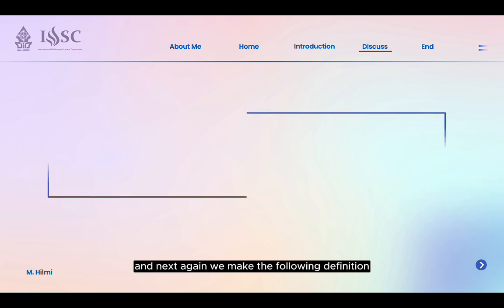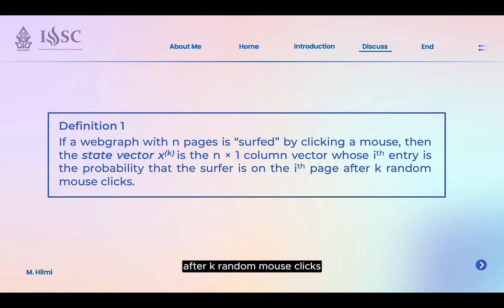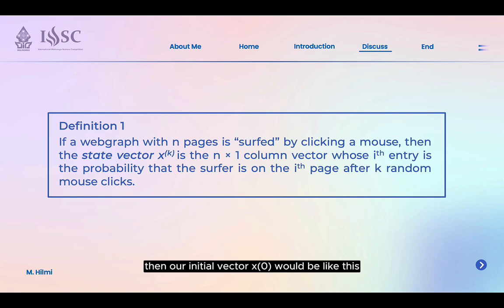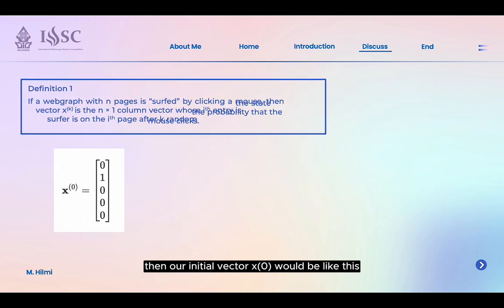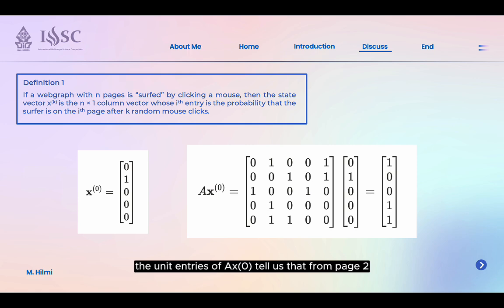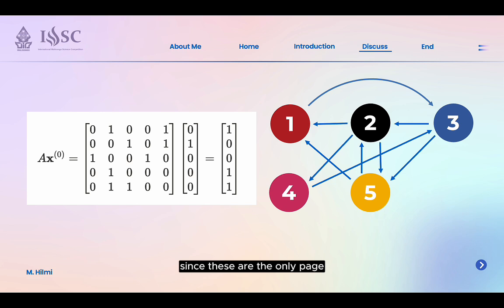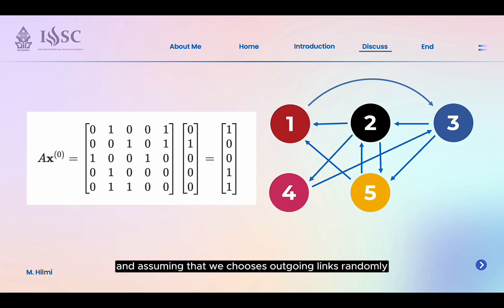Next, we make the following definition. The state vector xₖ is the n-by-1 column vector whose i-th entry is the probability that the surfer is on page i after k clicks. To illustrate this idea, if we know with certainty that we begin surfing from page 2 — meaning we are on page 2 after 0 mouse clicks — then our initial vector x₀ will be as shown. Taking a look at the product Ax₀, the nonzero entries of Ax₀ tell us that from page 2 we have the option of going to either page 1, 4, or 5, since these are the only pages to which there are outgoing links. And assuming we choose outgoing links randomly, each of these 3 pages will have equal probability of being chosen.